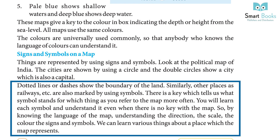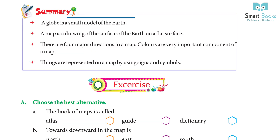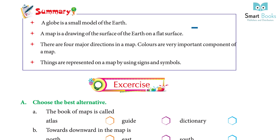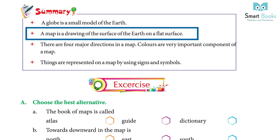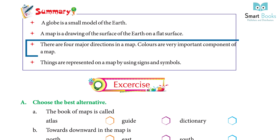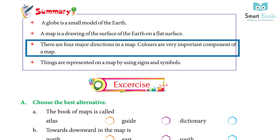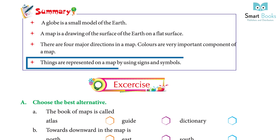Summary: a globe is a small model of the earth. A map is a drawing of the surface of the earth on a flat surface. There are four major directions on a map. Colors are a very important component of a map. Things are represented on a map by using signs and symbols.